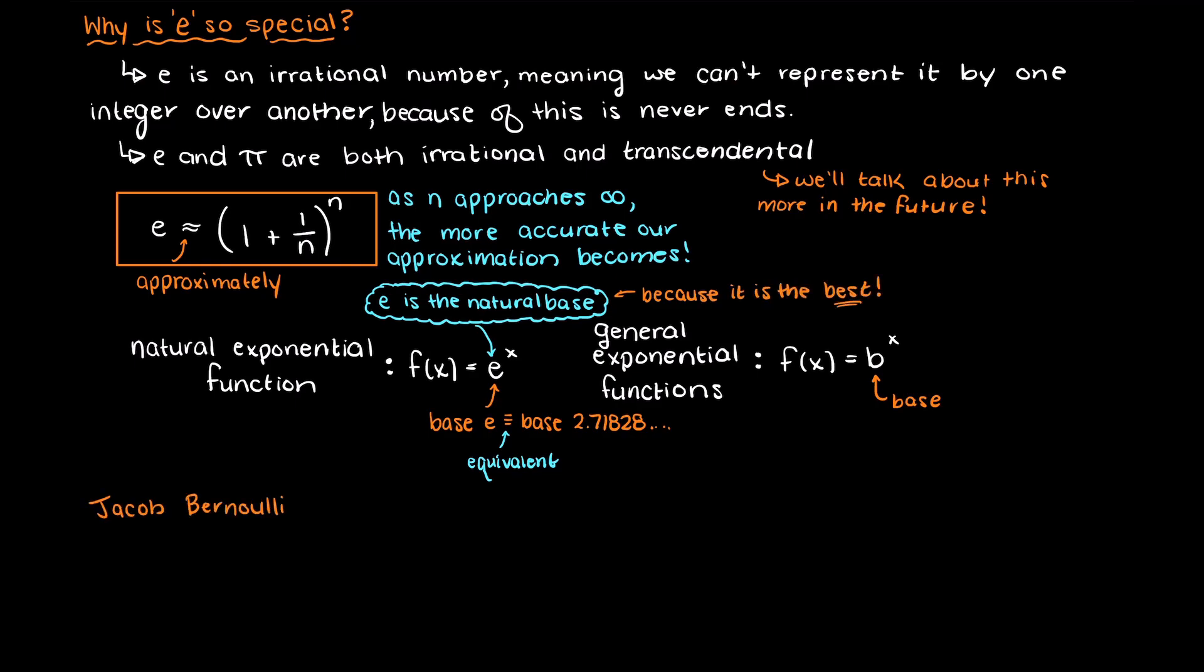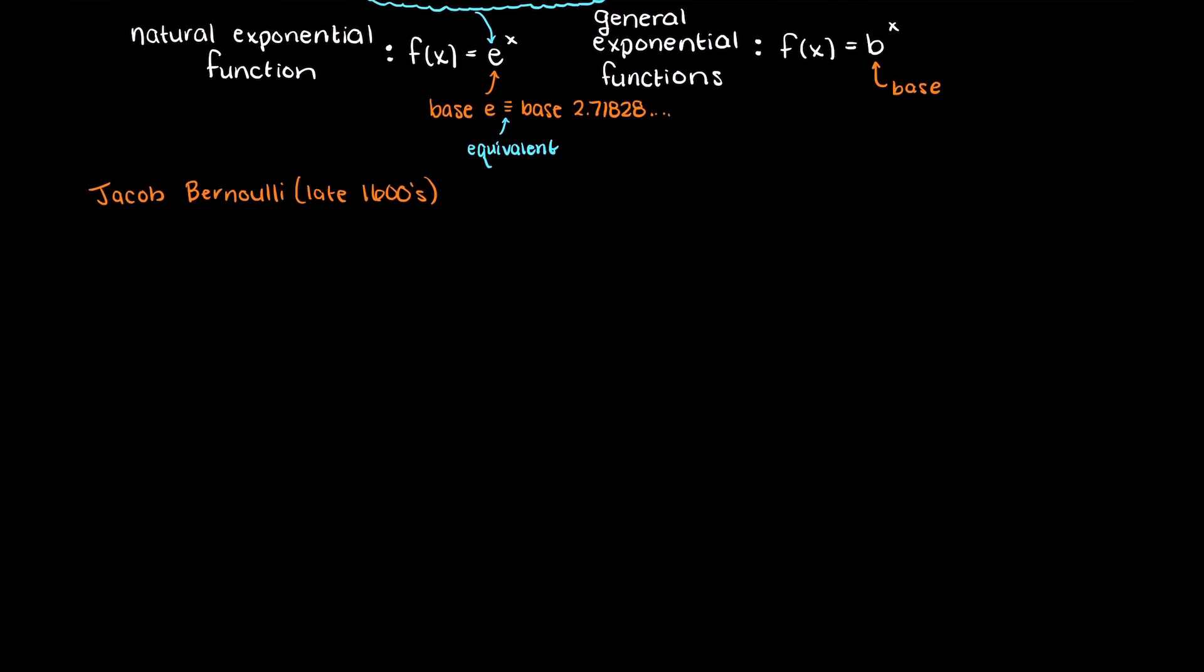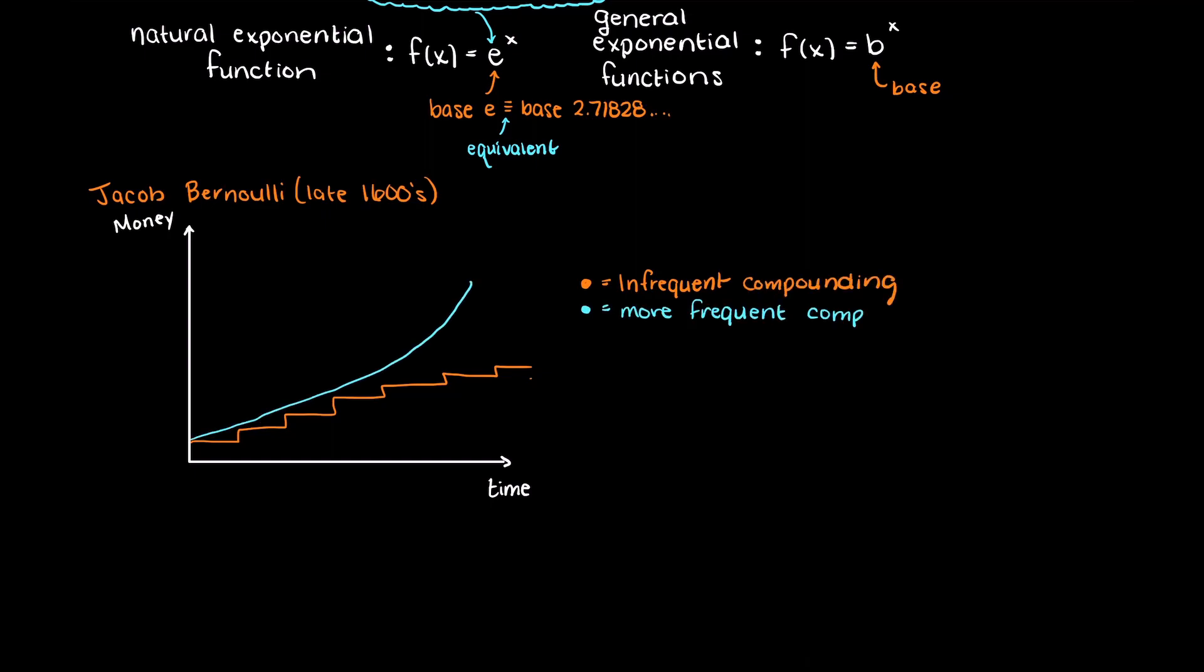Although there were some early uses of this irrational constant, the first functional use of this constant was in the late 1600s where Jacob Bernoulli was studying compound interest. Bernoulli was studying how the frequency of compounding the interest would affect the value of the money.